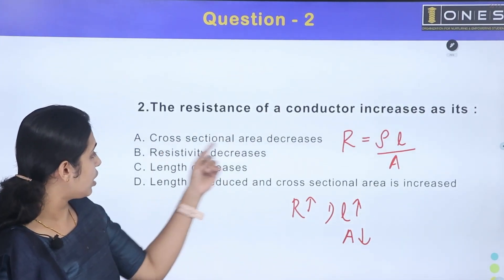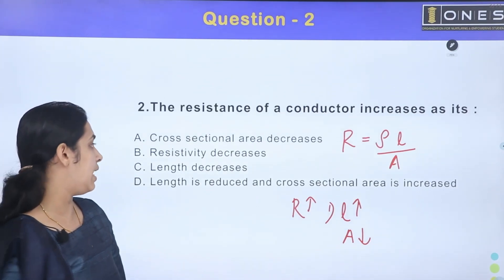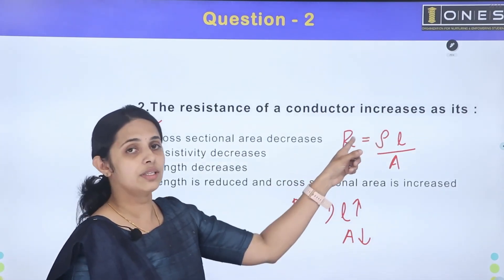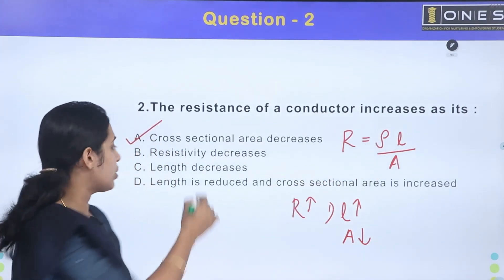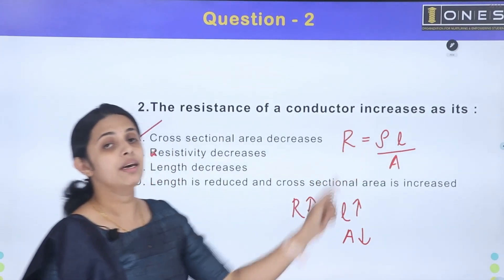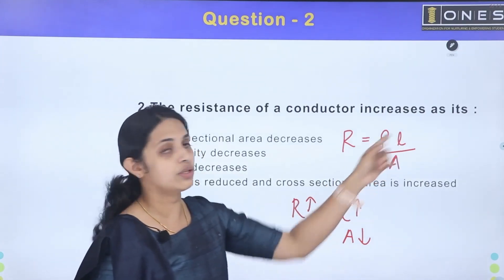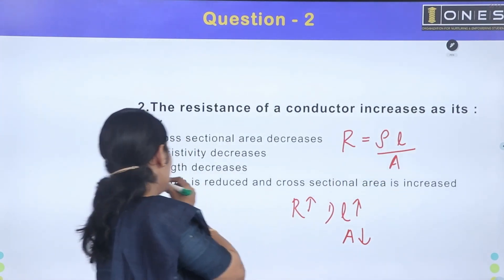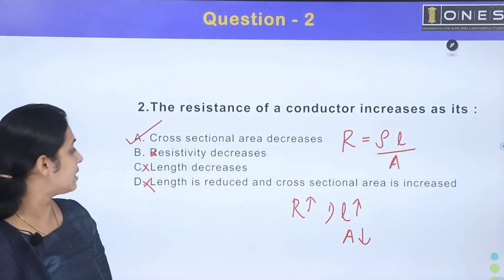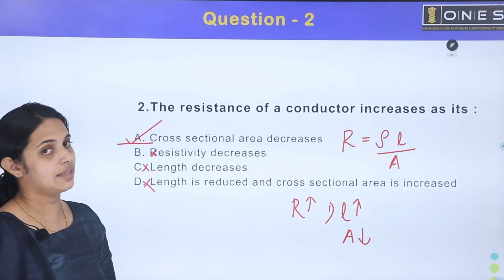The first option is cross-sectional area decreases — if we increase the conductor's resistance, that is the correct answer. Option B: resistivity decreases — resistivity is directly proportional to resistance, so that would increase it, not this case. Option C: length decreases — resistance is directly proportional to length. Option D: length is reduced and cross-sectional area is increased — that would reduce resistance, not increase it. So the answer is option A: cross-sectional area decreases.